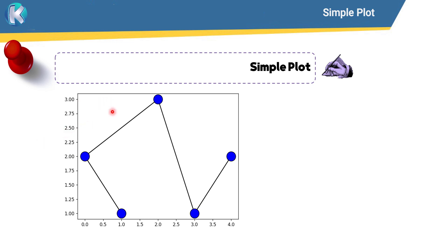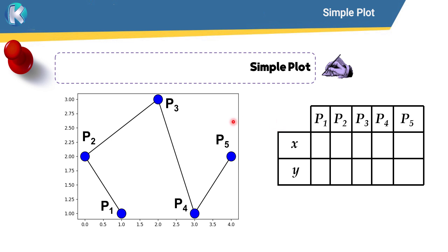Suppose that we want to plot a chart like this. As you can see, in this chart we have five points: point one, point two, point three, point four, and point five. In order to plot this chart in Python we need the coordinates of each point. For example, the x coordinate of point one is one, the x coordinate of point two is zero, the x coordinate of point three is two, and the x coordinate of point four is three.